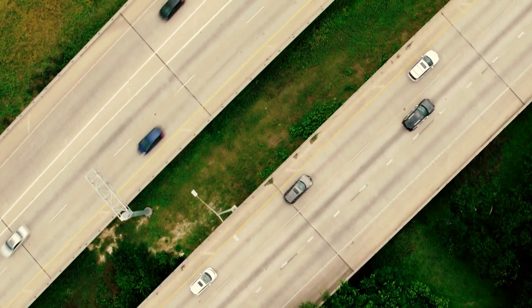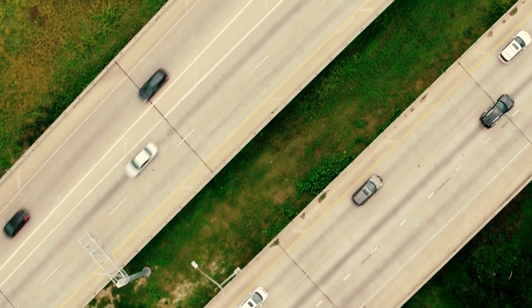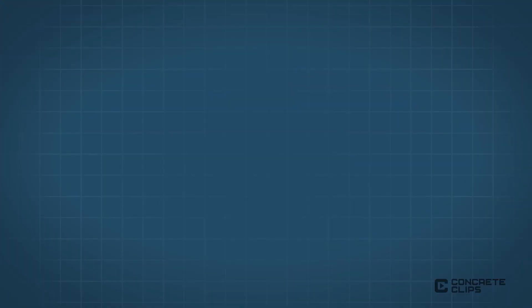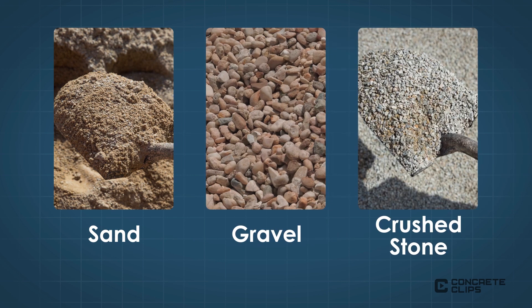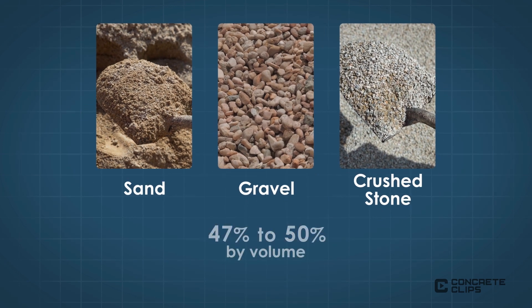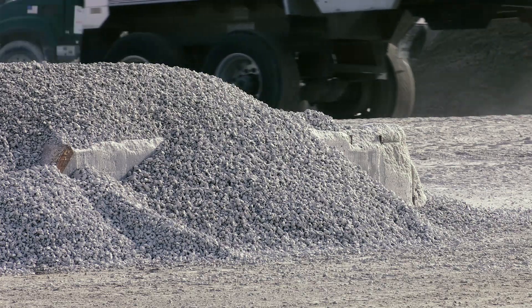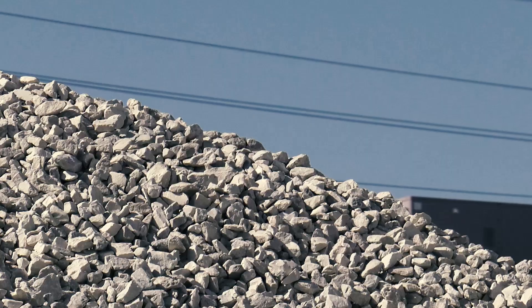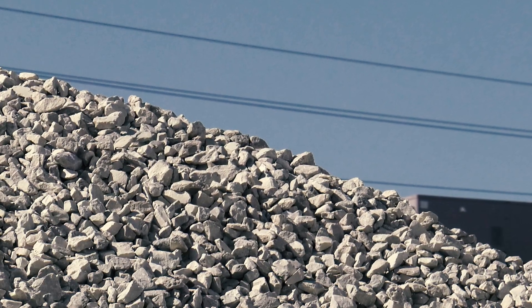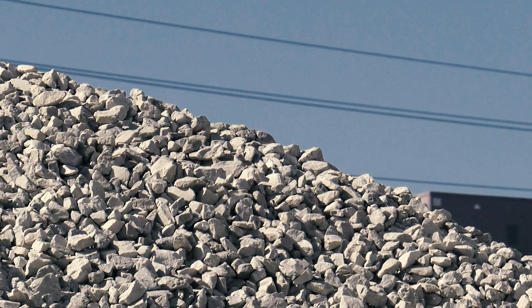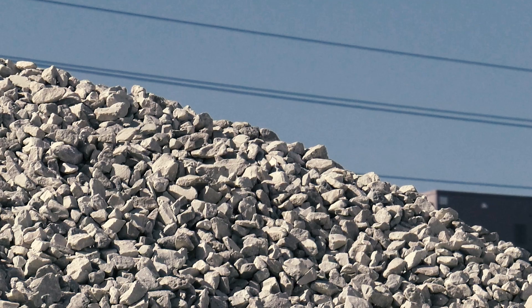Aggregates such as sand, gravel or crushed stone typically make up 60-75% of concrete by volume and 70-85% of concrete by weight. Aggregates are more than just filler and are essential ingredients that strongly affect the characteristics and performance of concrete.